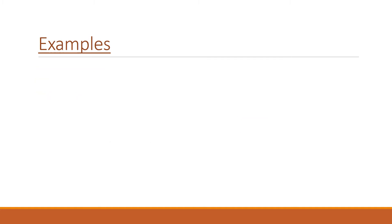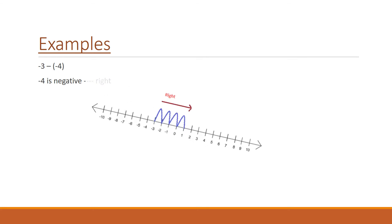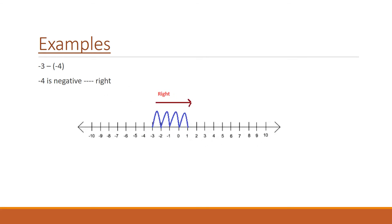Our next example is: subtract minus 4 from minus 3, that means minus 3 minus of minus 4. Here minus 4 is negative, so we need to move right on the number line. We start from minus 3 and move 4 steps right, and we reach 1. So minus 3 minus of minus 4 is plus 1.